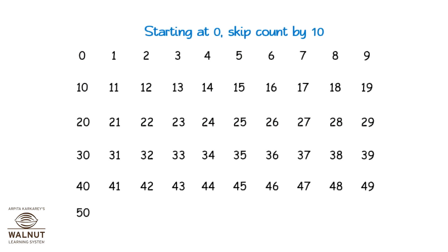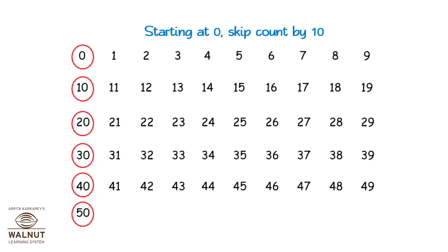Starting at zero, skip count by ten: zero, ten, twenty, thirty, forty, fifty.